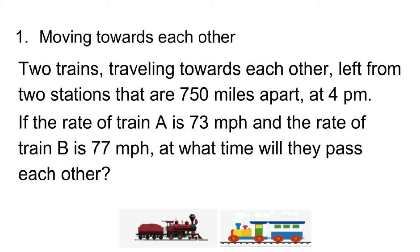Problem 1. Two trains traveling towards each other left from two stations that are 750 miles apart at 4 p.m. If the rate of train A is 73 mph and the rate of train B is 77 mph, at what time will they pass each other?